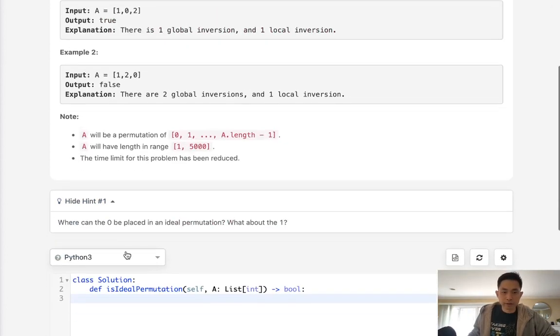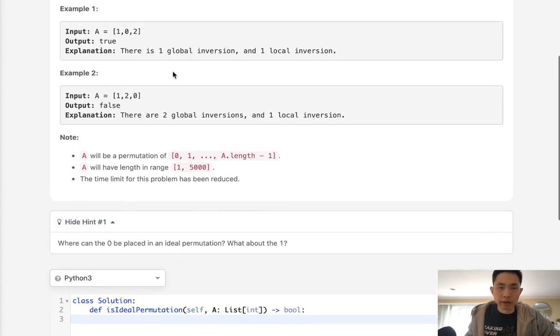Now big hint where can we place the zero for an ideal permutation? What about the one? All that means is if we want to minimize the number of inversions it would just be in order. If it would be in ascending order zero one two there are no inversions right.